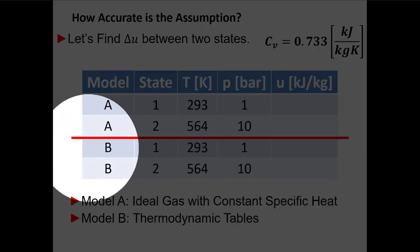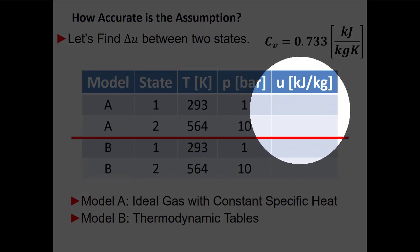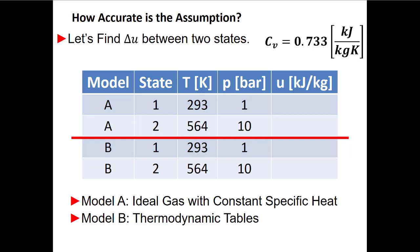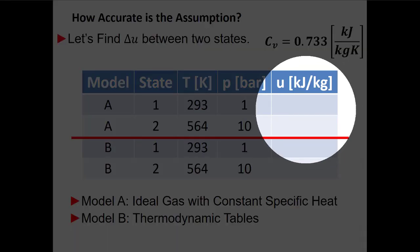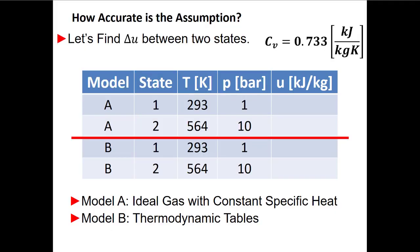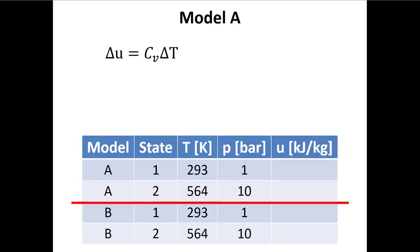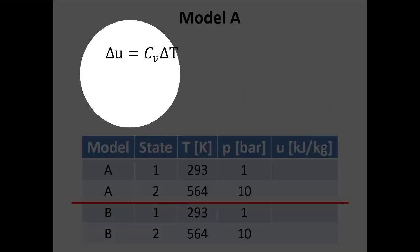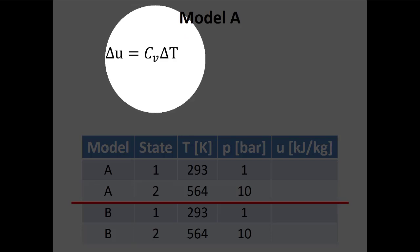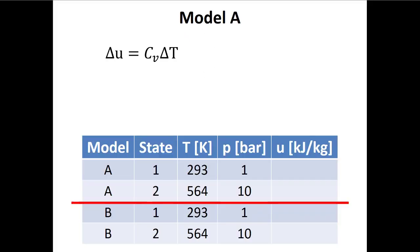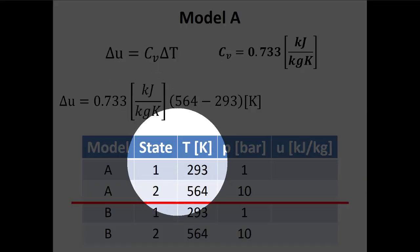With constant specific heat and an ideal gas, I can say delta U equals cv times delta T. The neat thing here is that on my state table I would normally enter actual specific internal energies, but if I invoke the constant specific heat assumption I don't actually find the individual values of little u — I'm only finding the change. That's fine because the first law asks for delta U, not the individual values.